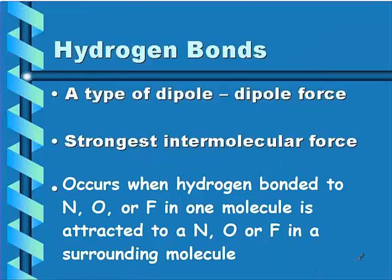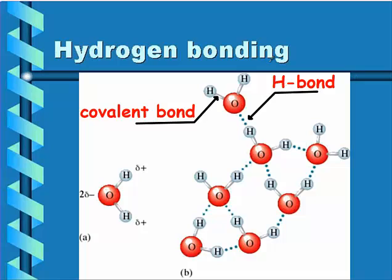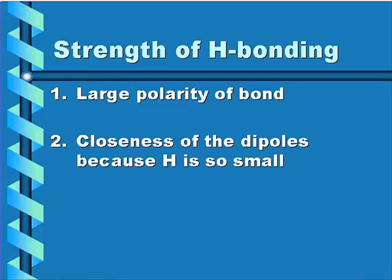A hydrogen bond occurs when hydrogen is bonded to either nitrogen, oxygen, or fluorine in one molecule, and is attracted to a nitrogen, oxygen, or fluorine in a surrounding molecule — it has to be between two molecules. Here we have water, and you can see the hydrogen bond between oxygen and a neighboring hydrogen atom. The hydrogen-oxygen bond itself is a covalent bond. Hydrogen bonds are stronger than dipole-dipole because nitrogen, oxygen, and fluorine are very electronegative, and because hydrogen is so small, the molecules are able to get very close together.